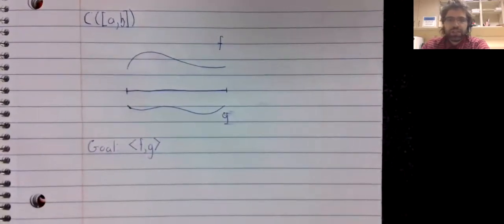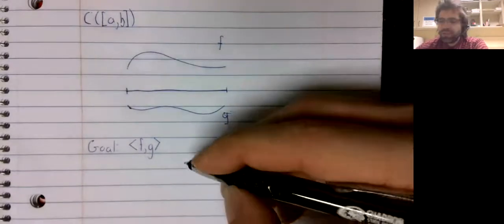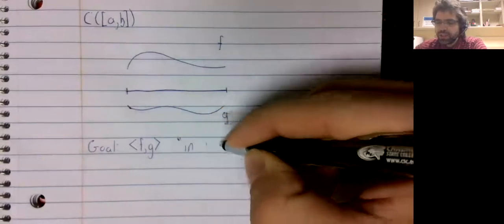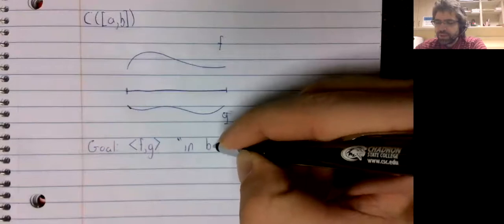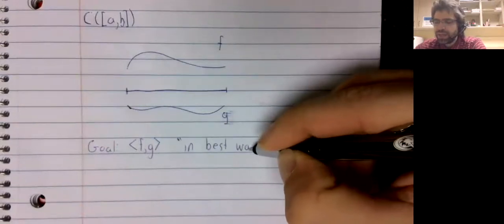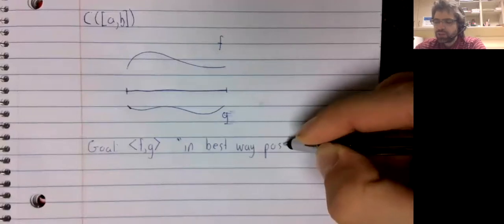And our goal is to define the inner product of f and g. This is going to be a little vague, but that states sort of a sub-goal in the best way possible.